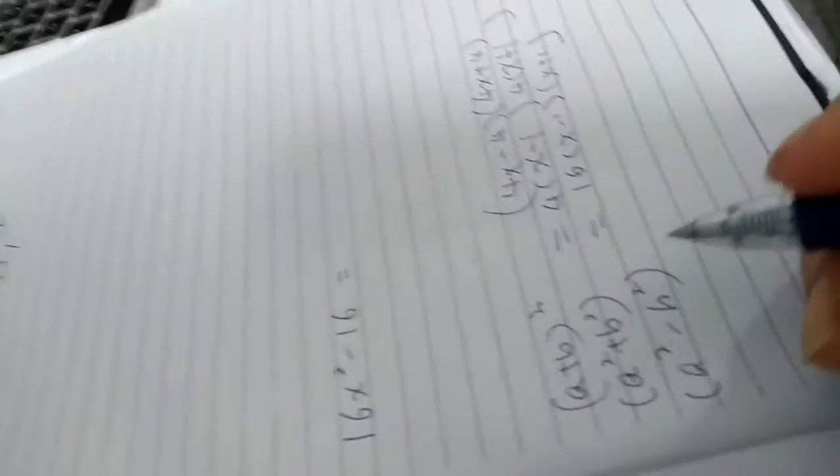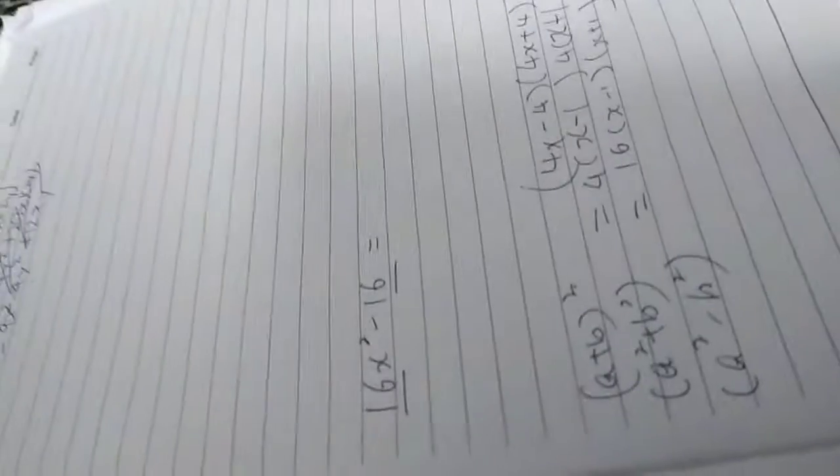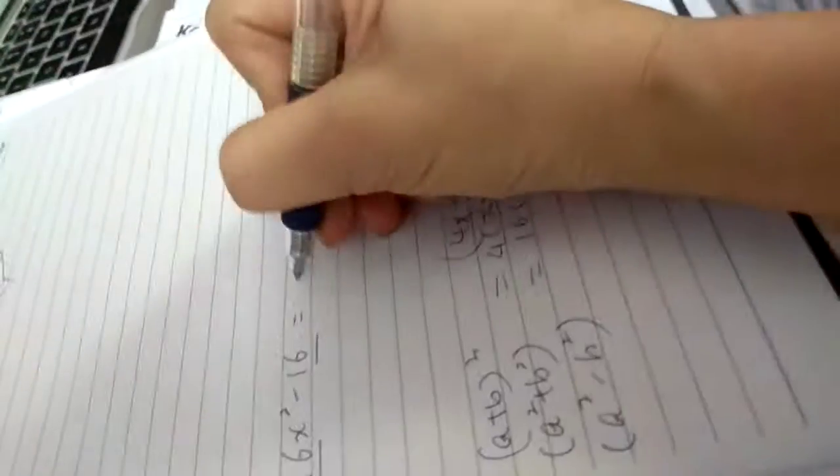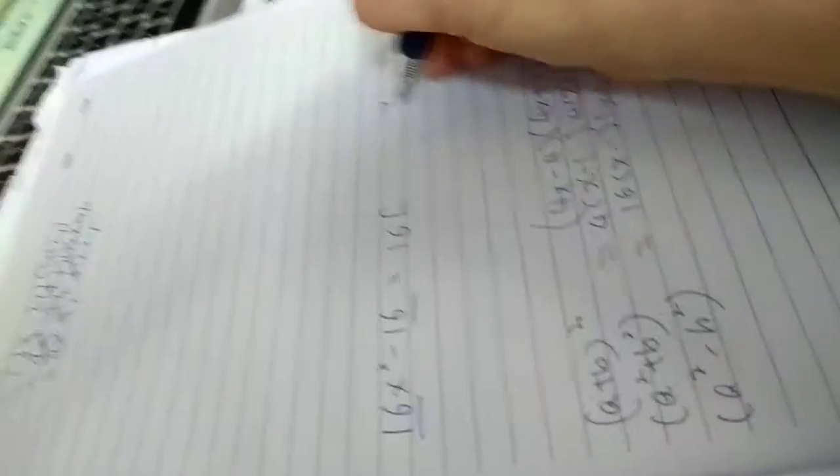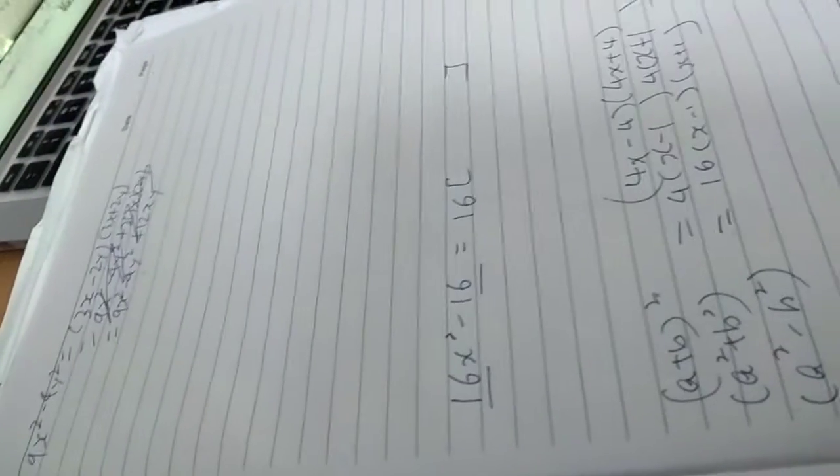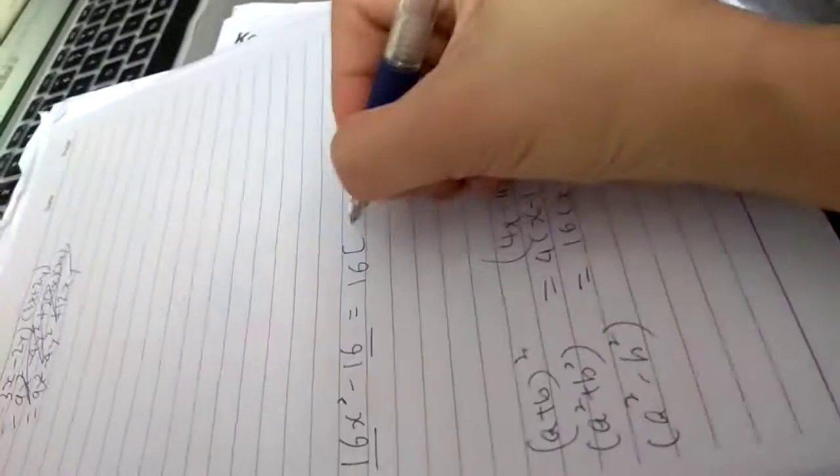Okay, how do we factorize this? Now you look at the 16. 16 is a common factor, so you take out 16 first. You factorize 16 first, so what's left? If I take out 16, then left with x squared minus 1.